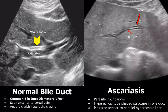Ascariasis is a type of roundworm infection. These parasitic worms can enter the bile ducts through the ampulla of Vater in the duodenum. The worm will appear as a tube-shaped structure in the bile duct or as parallel hyperechoic lines. If it is seen moving, that can be very helpful in diagnosis.